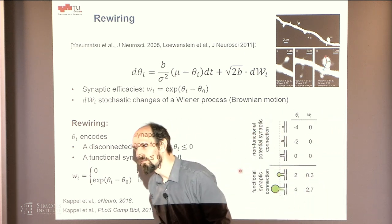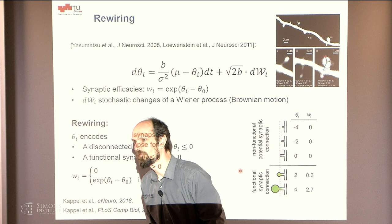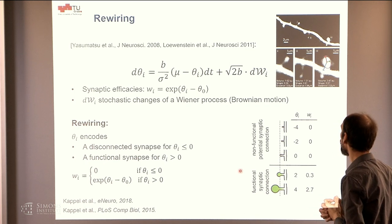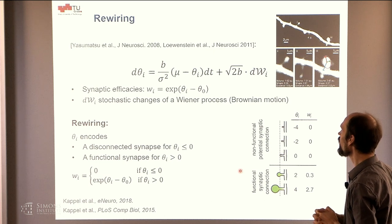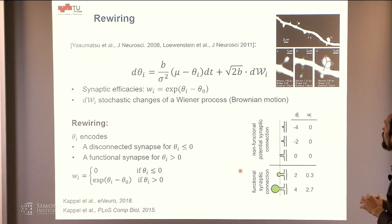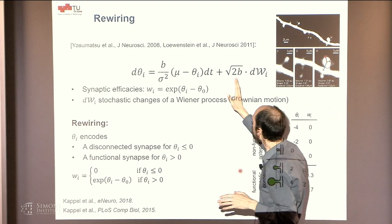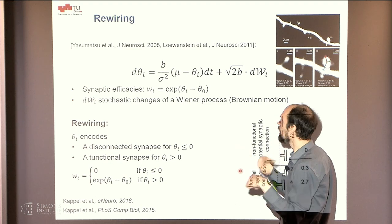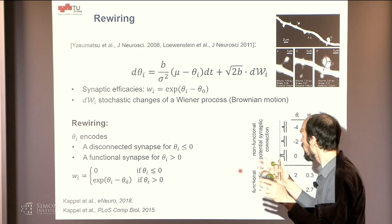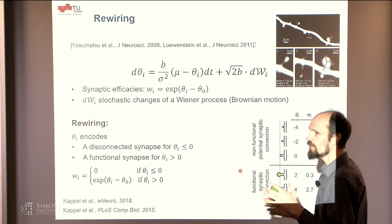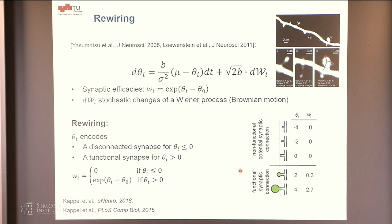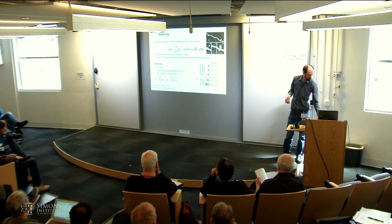A question from the audience asks whether the model distinguishes between non-functional silent synapses and non-existent ones. The answer is that in this model, when a synapse is disconnected, the activity-driven deterministic part disappears and only stochastic fluctuations remain — so a disconnected synapse cannot sense whether it would be useful. Only functional synapses can detect whether they are useful. A follow-up clarifies there are also impossible connections where the axon is elsewhere entirely.